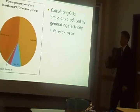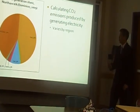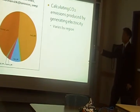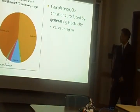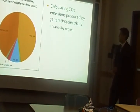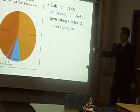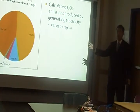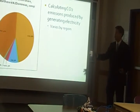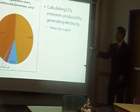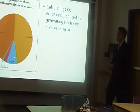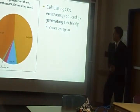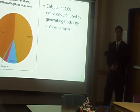When you generate electricity, you produce carbon dioxide from the power generation source. Our focus region is northern Virginia. As shown in the pie chart, electricity there is generated primarily from nuclear and coal. Nuclear does not produce carbon dioxide, but coal, gas, and oil do. This allowed us to determine the carbon dioxide produced when generating electricity for the heat pump.